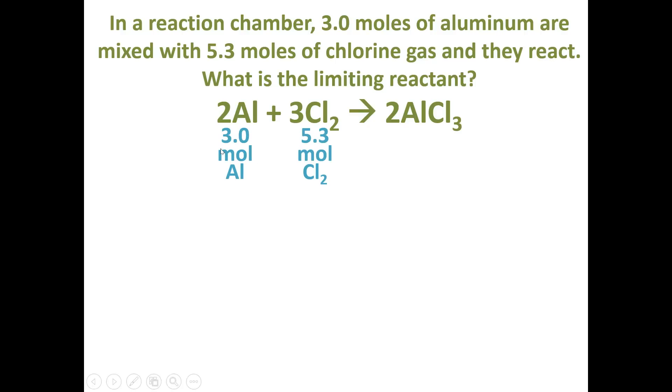To identify the limiting reactant, you're going to choose one of these numbers. It doesn't matter which one you choose. I always like to choose the first one for no particular reason, so this is what we're going to calculate. If you had 3.0 moles of aluminum, then you need - we're going to calculate how many moles of chlorine gas we need. We're going to start off with our given over 1, our amount of aluminum that is available.